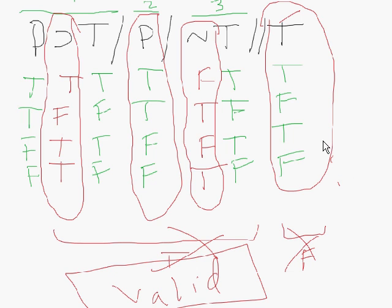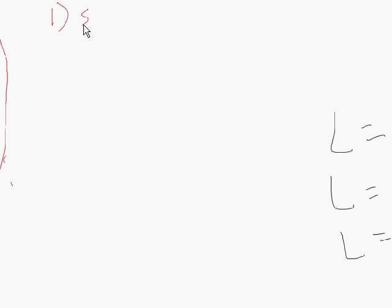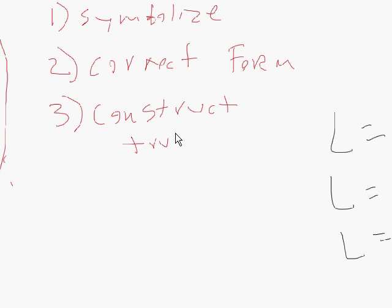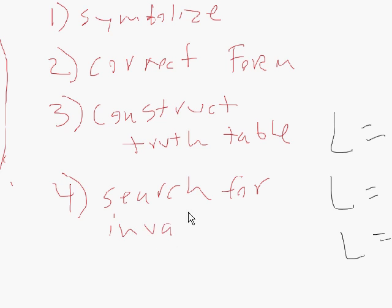So essentially, the steps you have to take are: one, symbolize the argument; two, write it out with the dashes in its correct propositional form, which is horizontal with the slashes; three, construct your truth table; and four, search for invalidity. If you cannot find invalidity — an invalid line — then it's valid. That's essentially all there is. It's quite simple.